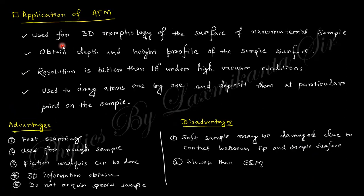From AFM you can get three-dimensional morphology; depth and height profiles are obtained. Resolution is better than 1 Angstrom. Scanning is relatively slower than SEM because it scans along each line of the sample. AFM is used for rough sample surface analysis, and 3D information is very important. One limitation is that for sharp sample features, the tip itself can be damaged or can alter the sample.